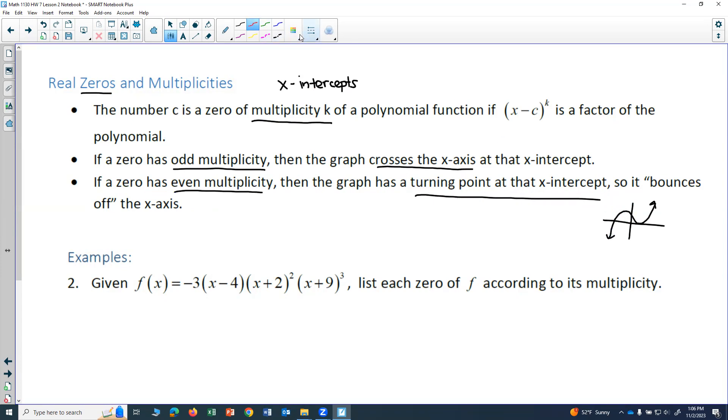At this point, at this x-intercept right here, that would be an odd multiplicity because the graph is actually crossing through the x-axis.